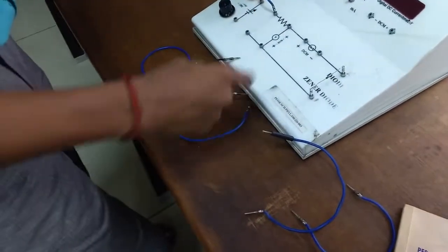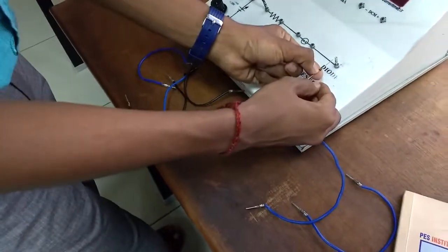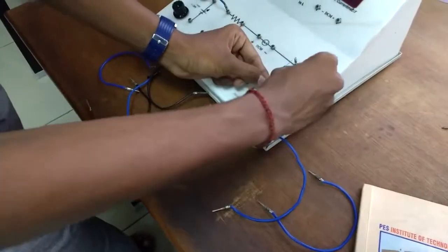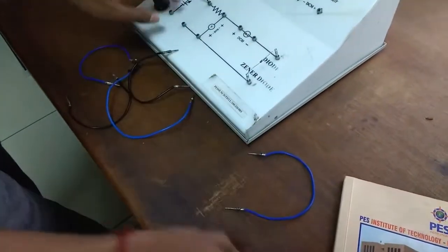This is the negative ring and the black ring is negative. This is positive. First, power connect.